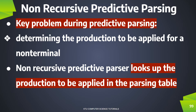We need to add additional components. In non-recursive parsing, the parsing will proceed using the parsing table. The parsing table represents a lot of productions. It is two-dimensional. So if you want to choose any alternative to the productions, you can choose any alternative using the parsing table.